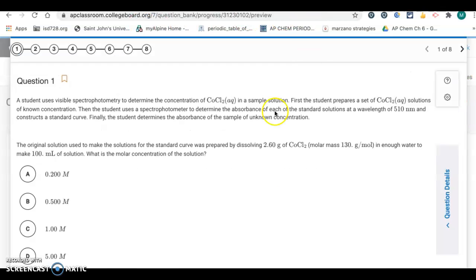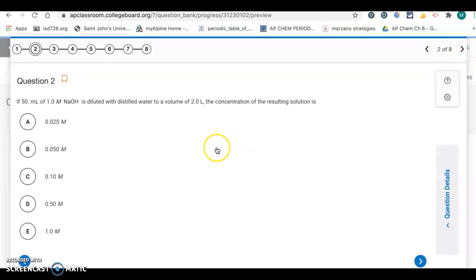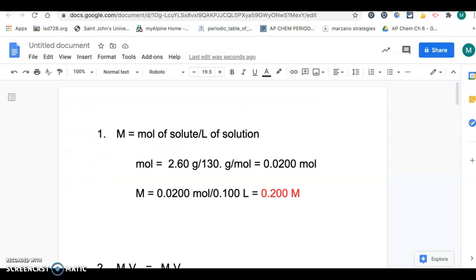Okay, so now we go back to our choices, so that's going to be letter A. Okay, number two is another calculation. We have if 50 milliliters of 1 molar NaOH is diluted with distilled water to a volume of 2.0 liters, the concentration of the resulting solution is one of those five. Alright, so for the calculation,